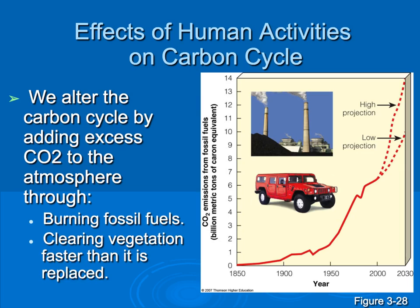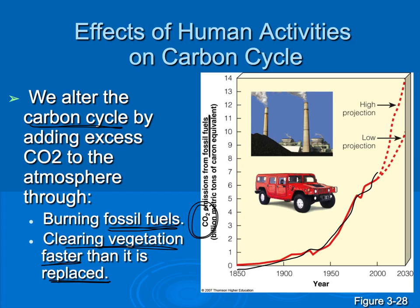Humans alter the carbon cycle in many ways. One of the biggest is through burning fossil fuels and clearing vegetation faster than we replace it. As the graph shows, there has been a very large increase in the amount of CO2 emitted from fossil fuels, because more factories and cars are releasing more carbon dioxide into the atmosphere. We'll get into more detail in our unit on human impacts.